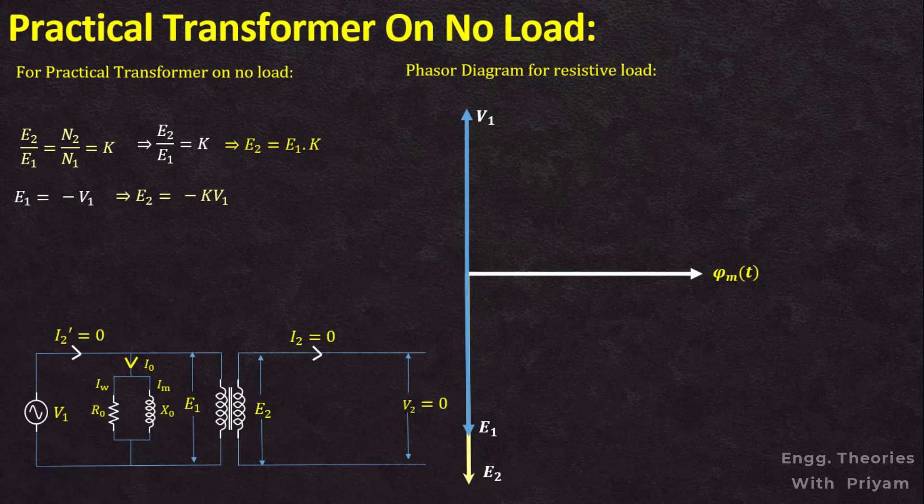At no load, there is no current in the secondary so I2 equals zero. On the primary side, the drop across resistance and the drop across reactance are very small, so V1 is approximately equal to E1. The no-load current I₀ is also very small. The voltage across the shunt branch equals V1, and the current flowing through the shunt branch equals I₀. The shunt branch consists of reactance and inductance, making it a lagging circuit, so I₀ will lag the supply voltage V1 by an angle φ₀.